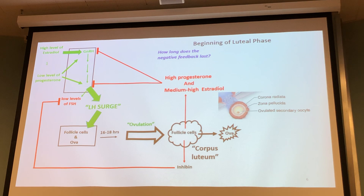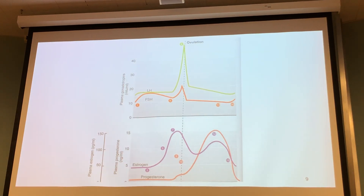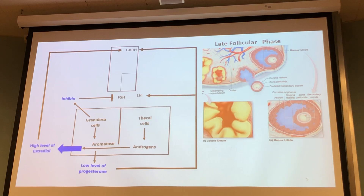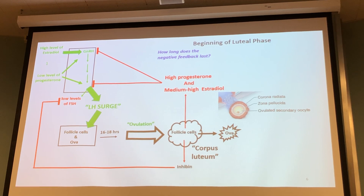Looking at slide 9, we can see after the LH surge and ovulation: estradiol is lowered to a medium-high level and progesterone is increasing. We have high progesterone and medium-high estradiol coming from the follicle cells still in the ovary. These high levels of progesterone and medium-high levels of estradiol are doing another negative feedback.